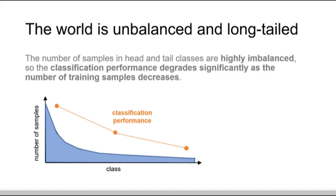The work is on balanced and long-tailed recognition, which means the number of samples in different classes is highly imbalanced. Current classifiers struggle with the imbalanced training distribution, and classification performance degrades significantly as the number of training samples decreases.